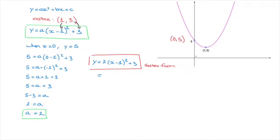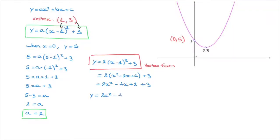We expand to get 2 times (x squared minus 2x plus 1) plus 3. Distributing the 2 gives 2x squared minus 4x plus 2 plus 3. Finally, simplifying, this parabola's equation is y equals 2x squared minus 4x plus 5. We've just found this parabola's equation using the coordinates of its vertex and its y-intercept.